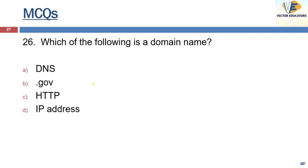Which of the following is a domain name? The answer is .gov. Domain names such as .com, .edu, etc., divide the WWW sites into categories based on the nature of their owner.